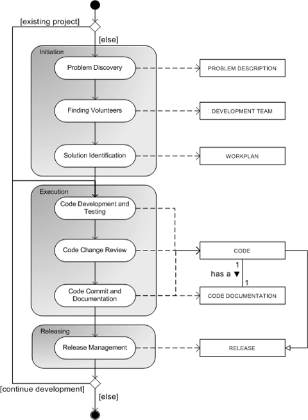A package management system is a collection of tools to automate the process of installing, upgrading, configuring, and removing software packages from a computer. The Red Hat Package Manager for .rpm and Advanced Packaging Tool for .deb file format are package management systems used by a number of Linux distributions.